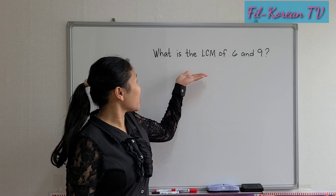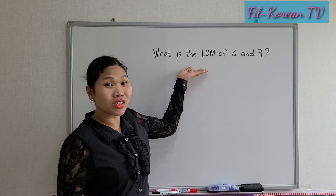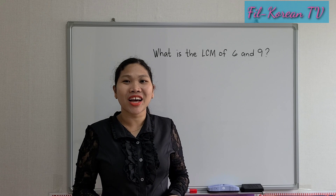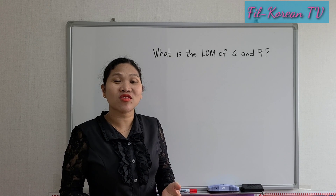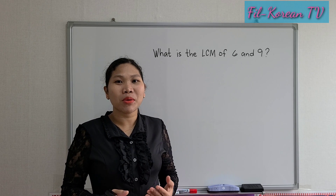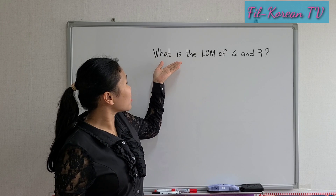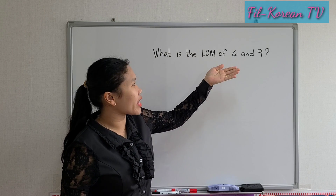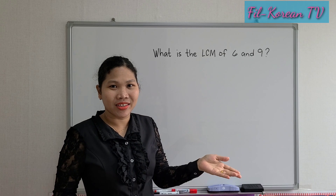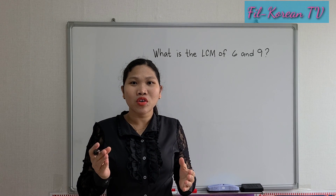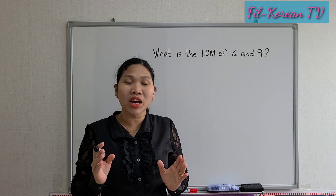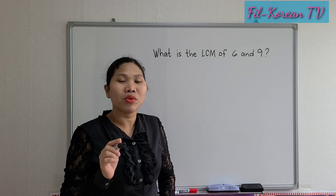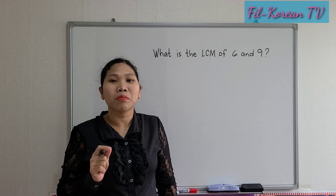Let us take this question to show the different methods in finding the LCM, or least common multiple. The question is: what is the LCM of 6 and 9? I will show you how to get the LCM of 6 and 9 in three methods. We will start with the listing method.